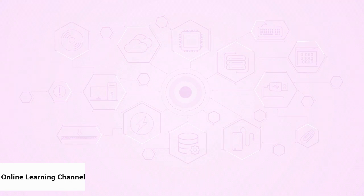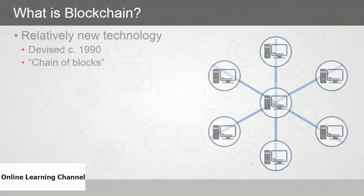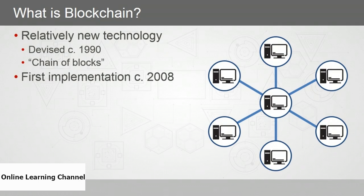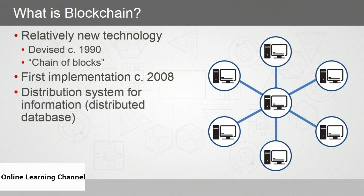In this video, I'll describe the basic purpose of blockchain technology. Blockchain is a relatively new technology — relatively, because it's been with us since 1990. The idea wasn't new when the first blockchain was implemented around 2008. The main idea behind blockchain technology is that of a distribution system for information: a distributed database.